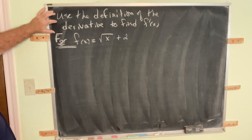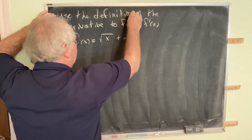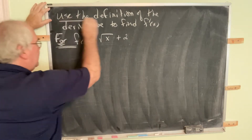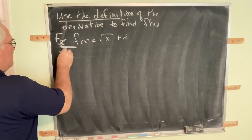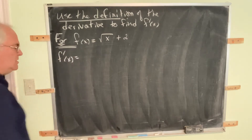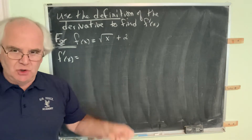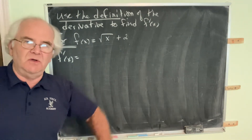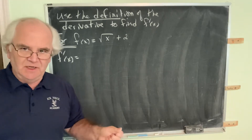Here we have another example of a similar process. Use the definition of the derivative to find f prime of x. So we're going to find the derivative, but we're going to use the definition. I don't want just a final result — I'm after whether you know how to use the definition. You need to demonstrate that you know how to use the definition.